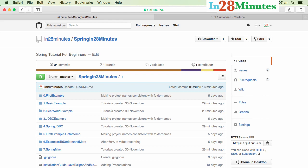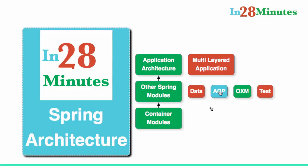Let's now get started with the specific topic of this particular video. In this video, we would discuss the modular architecture of Spring. Spring is created as a number of independent components, which are also called modules. We would start off with the basics — the container modules. We would be talking about Spring Core and Spring Context, which are basically the container modules that give the fundamental things that Spring is supposed to provide.